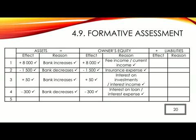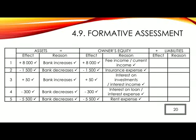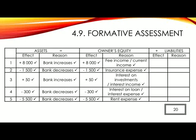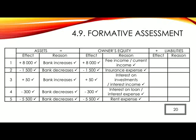Number five: paid 5,500 Rand for the month's rent. Bank is an asset, so you will show minus 5,500 (tick) because bank decreases (tick). In owner's equity, minus 5,500 (tick) because of rent expense (tick).